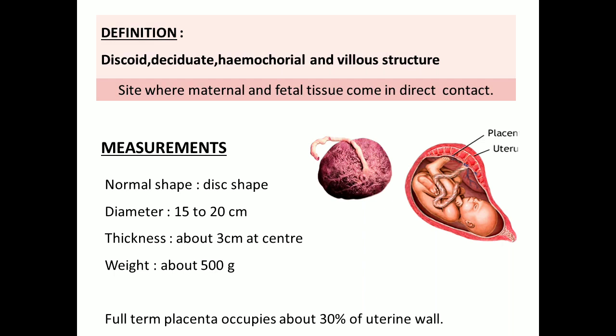No rejection happens between fetal and maternal blood. The diameter of the placenta will be around 15 to 20 centimeters, its thickness varies at different parts, and at the center the thickness will be about 3 centimeters. It weighs about 500 grams. The full term placenta weighs about 30 percent of the uterine wall — only 30 percent of the uterine wall is occupied by the placenta.